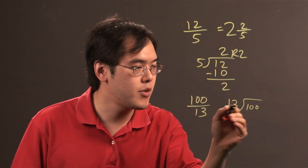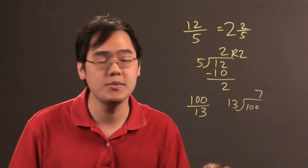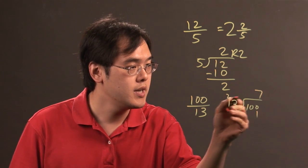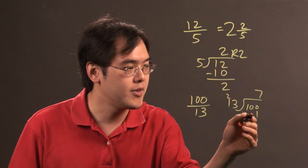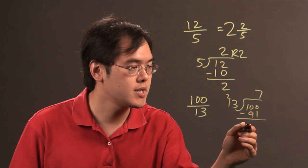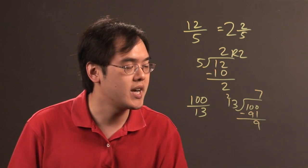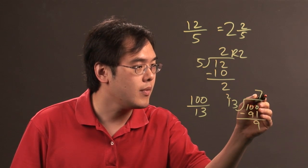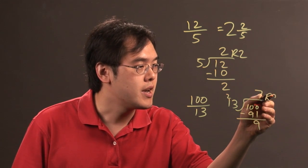13 does not go into 10, but 13 goes into 100 we think 7 times. 7 times 3 is 21, 7 times 1 is 7, add the 2 is going to be 9. Subtract, 100 minus 91 is 9, so it will be remainder 9.